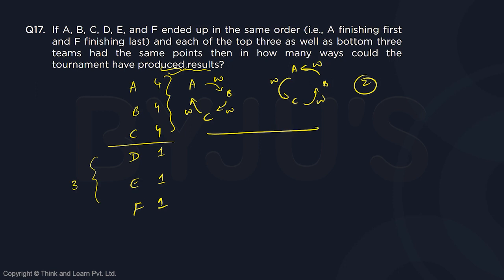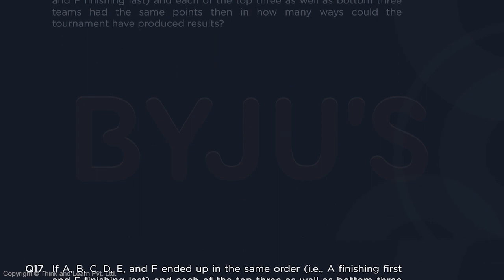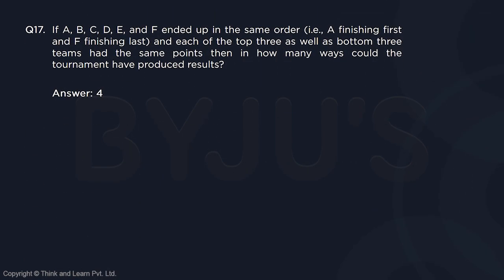Similarly D, E, F are 1, 1, 1. Who is winning against whom? Once again two possibilities: D beats E, E beats F, F beats D — or the reverse counterclockwise cycle. So two possibilities in the upper group and two in the lower group. Total possible combinations: 2 × 2 = 4. That is the answer to question 17.